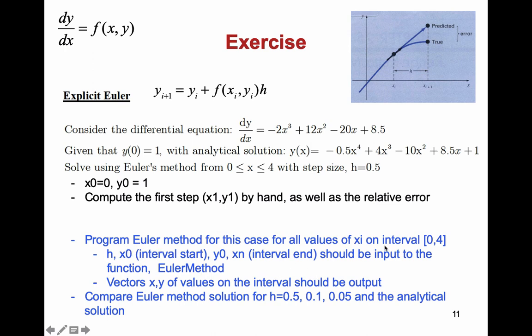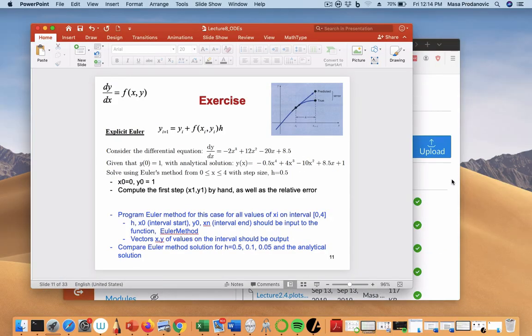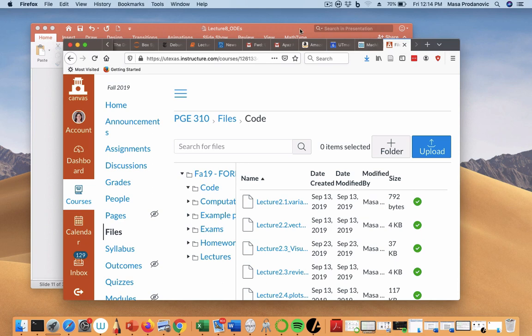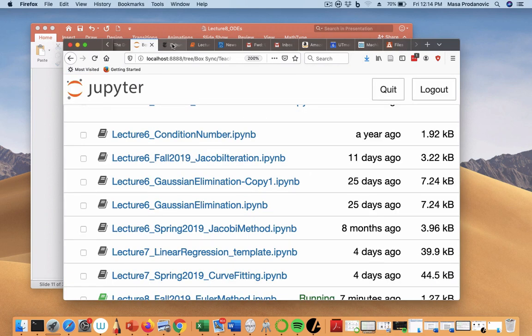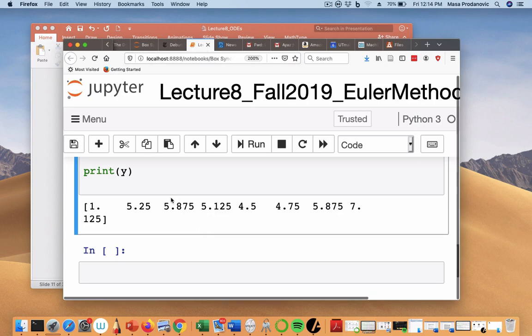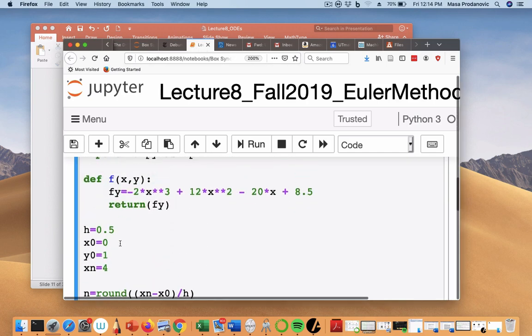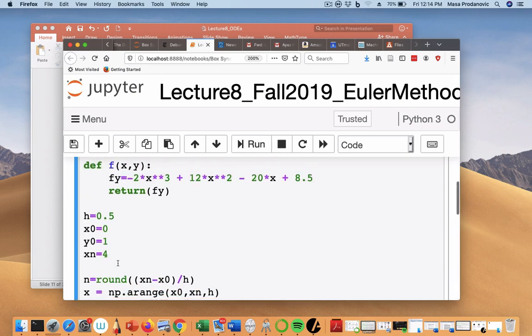I said, program Euler method for this case, for all of these values of xi on interval 0, 4, and h, x0, y0, xn are my inputs. And then I should actually output vectors x, y of values on the interval as output of this function. What did I do last time? And I posted this code that I did for you. These are my inputs. I didn't create the function just yet out of it.